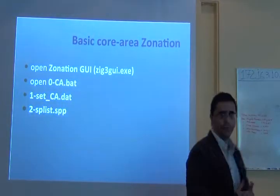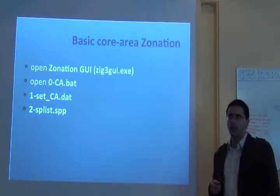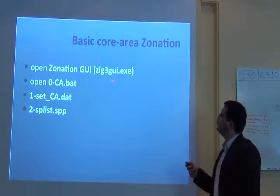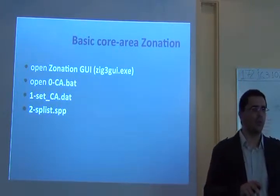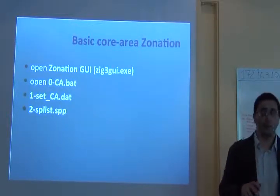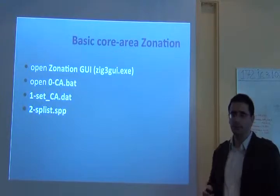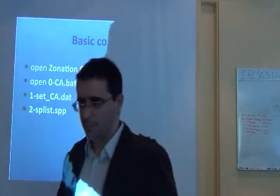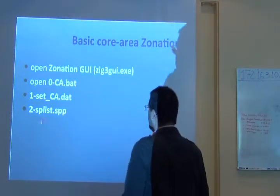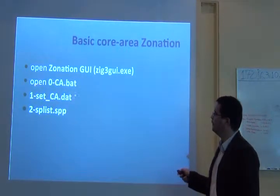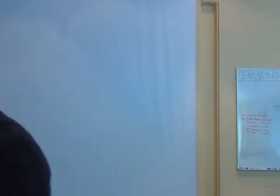So, the first thing we're going to do is to run a very basic exercise of core area zonation. You should open the zonation graphic user interface, which is this file. Then you double click to open a new project. Sorry. Right click to open a new project. And you will open this file, 0CA, this is for core area, .bat. I will do that with you. We will be using these settings here and this species list file. Just open it with you so we can do together this analysis.